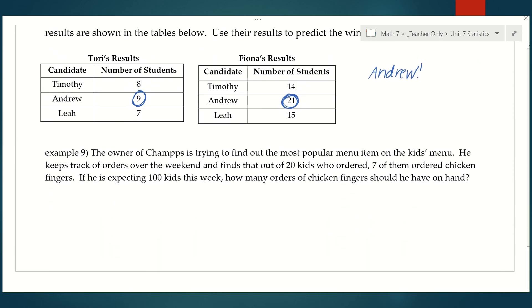Last one. The owner of Champs is trying to find out the most popular menu item on the kids menu. He keeps track of orders over the weekend and finds that out of 20 kids who ordered, seven of them ordered chicken fingers. If he is expecting 100 kids this week, how many orders of chicken fingers should he have on hand? So seven out of 20, there's my part out of whole, ordered chicken fingers.